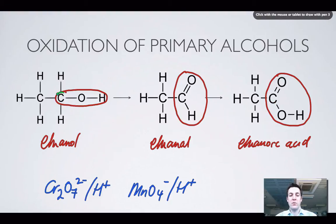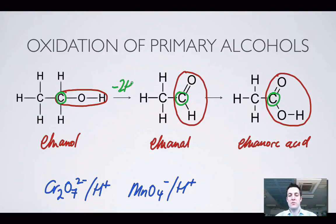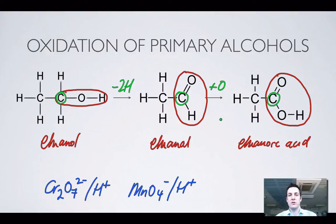Let's just have a look at why this can be called oxidation. If I highlight the carbon that's been oxidised, we can see that here it's lost a hydrogen and another hydrogen — so it's lost hydrogens. Remember that's one way of describing oxidation. We'll see later that they're losing electrons as well. And here it's gaining an oxygen, and that's another way of describing oxidation. So alcohol to aldehyde loses two hydrogens, and aldehyde to carboxylic acid gains one oxygen atom.